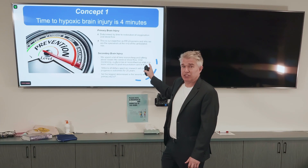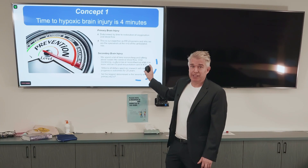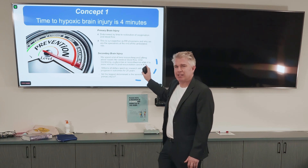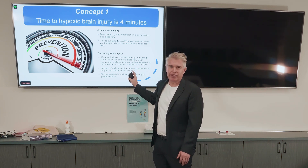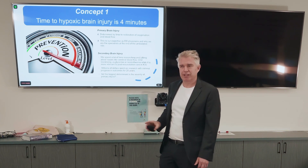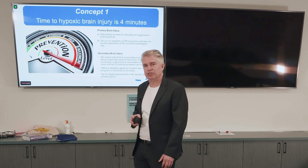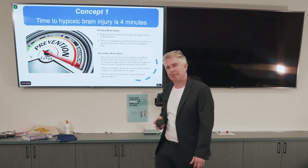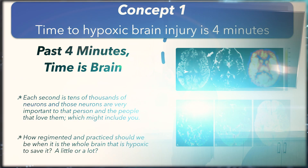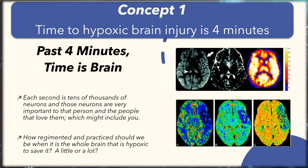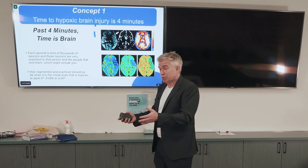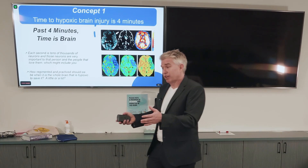But the primary brain injury is where all the money is. Yet how many millions of dollars do we spend trying to get it right at the front door? How much time do we practise doing emergency tubes? Past four minutes, time is brain. Every second counts — every second becomes tens of thousands of neurons. And that's really important to the person in front of you.